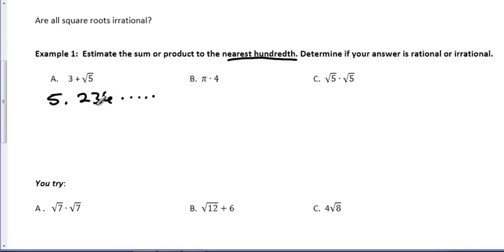So we're going to take a look at the hundredths place, which is right here. That 6 is going to tell that number to bump up, so that's 5.24. The second piece of this problem tells us to determine if the answer is rational or irrational. We're talking about the original answer, not this. When you add or multiply a rational number by an irrational number, your result is going to be irrational.